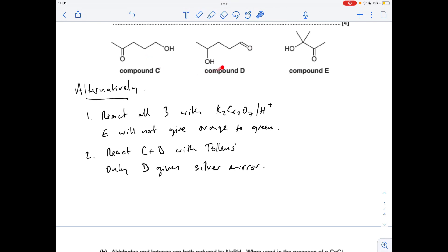That would leave you with C and D. So remember D's got the aldehyde group, so if you reacted both of those with Tollens reagent only D is going to give the silver mirror and again you've already seen the oxidation reaction for compound D.